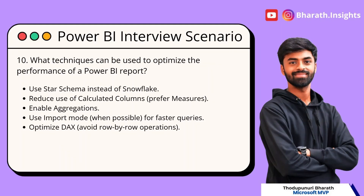The next question: what techniques can be used to optimize the performance of a Power BI report? This is a mandatory and commonly asked question. One approach is data modeling — I focus on star schema instead of snowflake and convert where possible. Another area is avoiding calculated columns wherever possible and preferring DAX measures instead. A calculated column adds extra load to Power Query and is processed row by row on every refresh, whereas a measure is calculated on the fly.